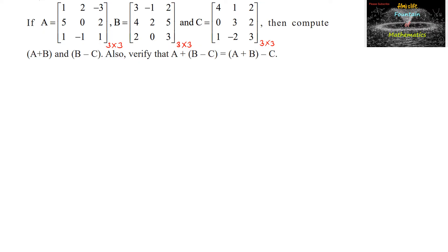Then compute or find the value of A plus B and B minus C. Also verify that A plus of B minus C is equal to A plus B minus C. Since the two matrices A and B have the same order 3 by 3, addition is possible.